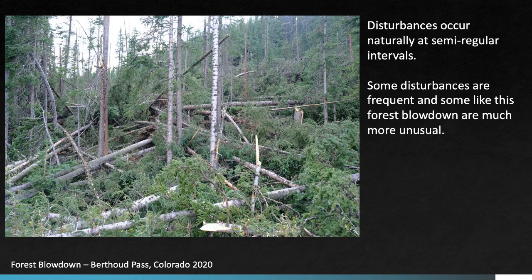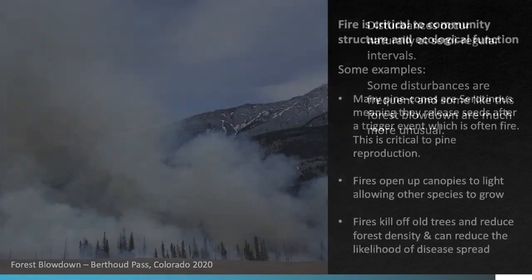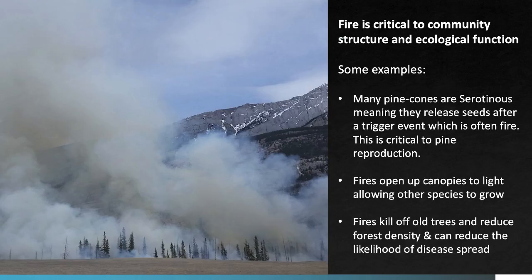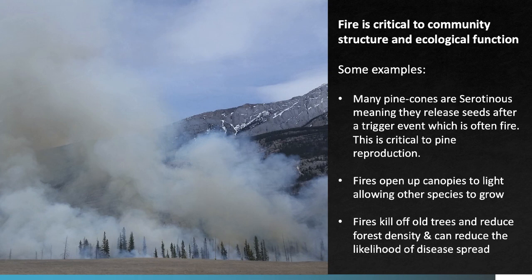These pine beetles are a naturally occurring insect disturbance, but their activity and spread has been influenced by warming temperatures due to climate change and by forest management decisions that suppressed fire and led to older stands of pine trees more vulnerable to insect outbreaks. Fire is a really important form of disturbance and plays a major role in the structure and function of many forests and grasslands. Because disturbances like fire are natural processes, plants are often well adapted — for example, many pine cones are serotinous, meaning they only release seeds after a fire. Disturbances like fire also allow more light into the forest, enabling different groups of species to grow, and are important to forest age structure and reducing disease spread.